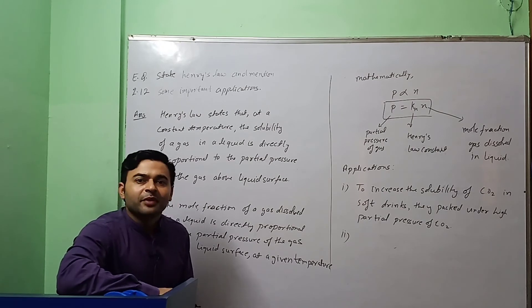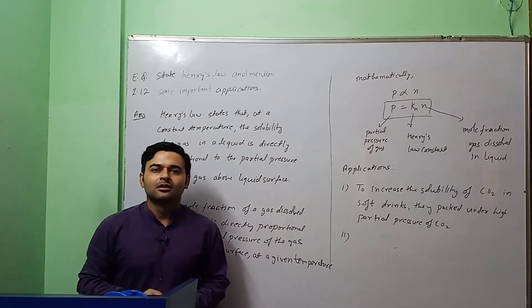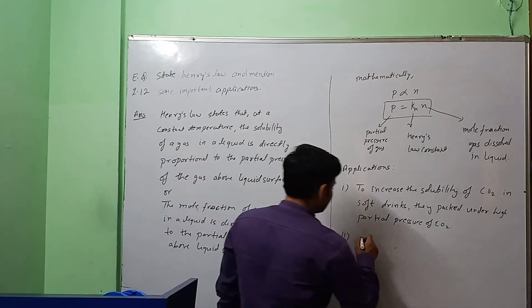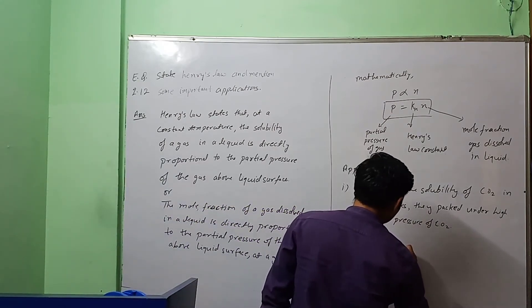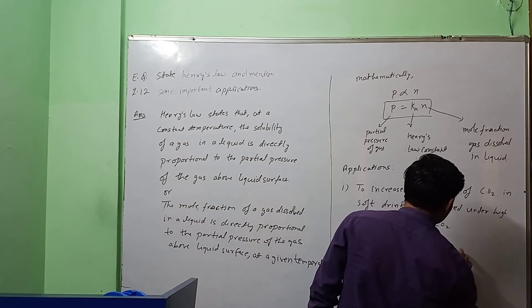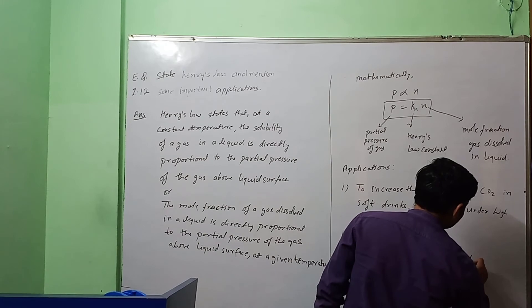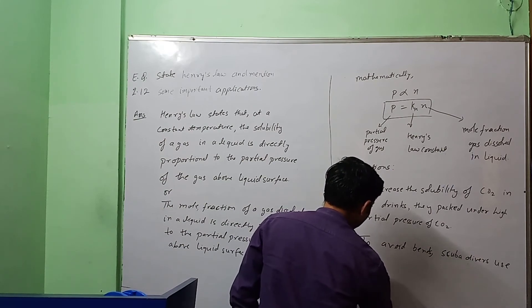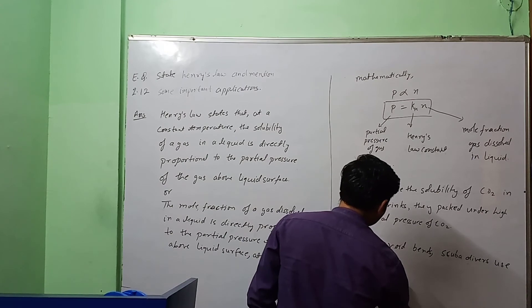So to avoid bends, the scuba divers take cylinder in which there is a mixture of helium, nitrogen and oxygen. Helium has least solubility, so helium is used by scuba divers. So what is the proportion? So let's write it: to avoid bends, scuba divers use cylinder containing